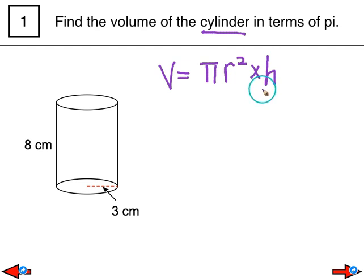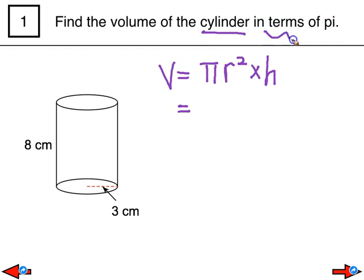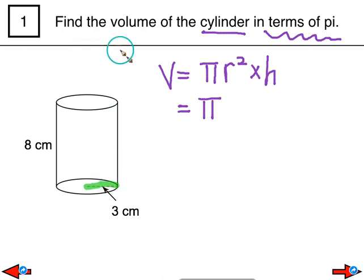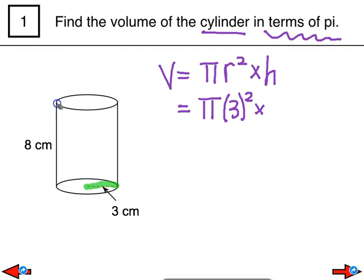Now that I have the formula, I can go ahead and plug in the values that I know. First things first, it's important to leave pi alone for right now, because I do want it in terms of pi — so I'm just going to write down the symbol. For radius, I know the radius is 3, so I'm going to plug in 3 and square it, then multiply by h. The height of the cylinder is 8 centimeters, so I'll plug in 8.